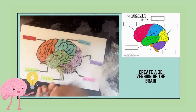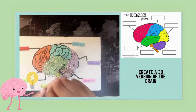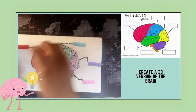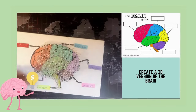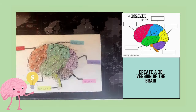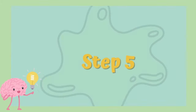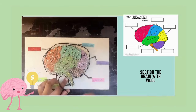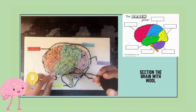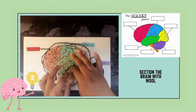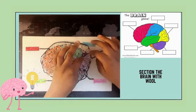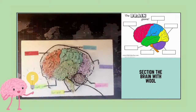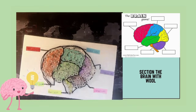Step 4: Add beads onto your 2D brain to create a 3D visual of your model. Step 5: Use a black wall to outline the beads so they stay in order and maintain the shape of the brain.